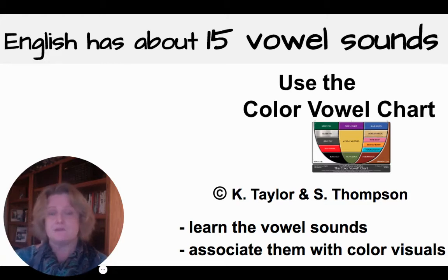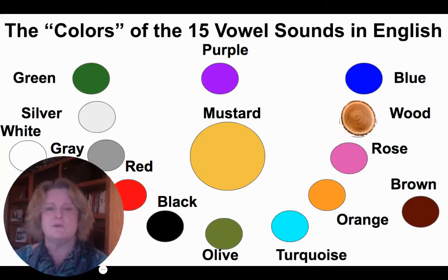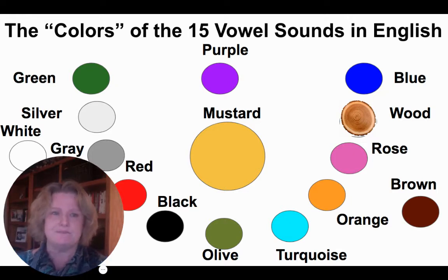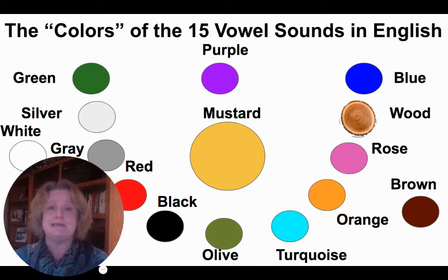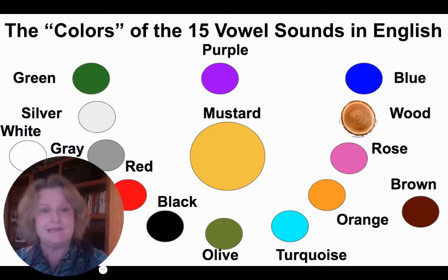The color vowel chart was created by Karen Taylor and Shirley Thompson. The logic is that for each color, you have the vowel sound in it. Look at the left — green. We call it green because it has the vowel E in it.